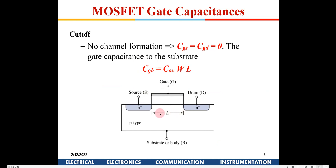When there is no gate bias at all, there is no electrostatics between the gate and the source or gate and the drain. The entire p-type acts like a metal sheet. On the gate you have another metal contact and in between you have an insulator. So the total capacitance between gate and source is zero, gate and drain is zero, and gate and body will be COX·W·L.